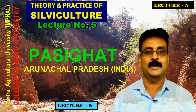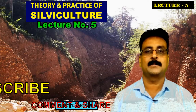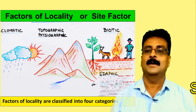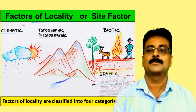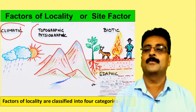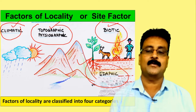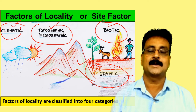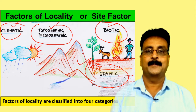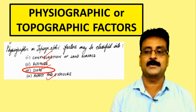Theory and practice of silviculture, lecture number five. In the previous lecture we studied climatic factors, and in this lecture we are going to study topographical or physiographic factors of locality. We have four categories: climatic, topographic or physiographic, edaphic, and biotic. In this lecture we will study slope, aspect, and exposure, having already covered configuration of land surface and altitude.